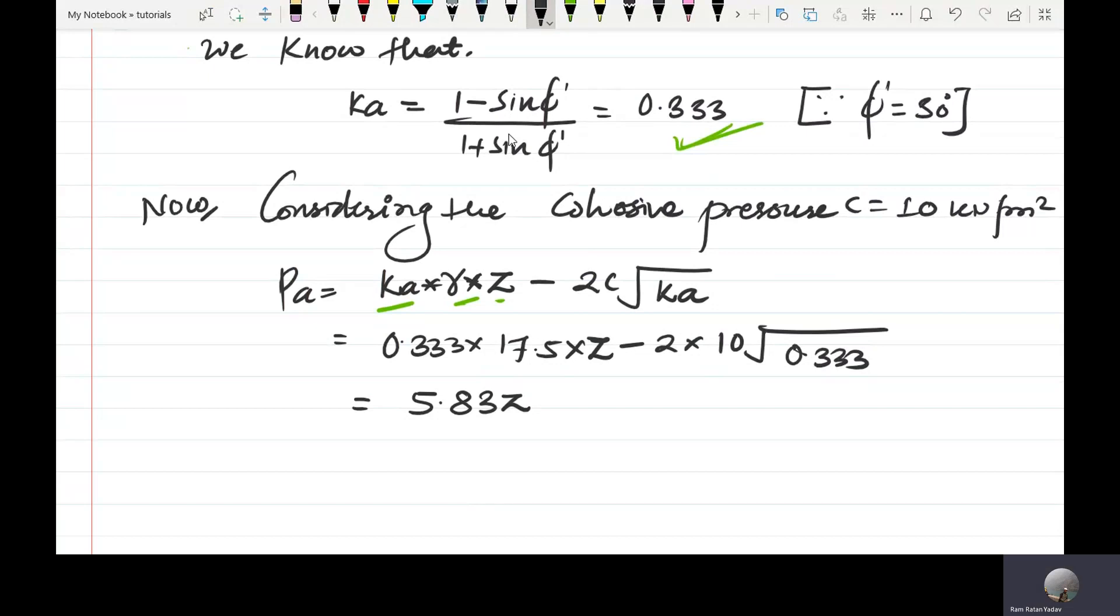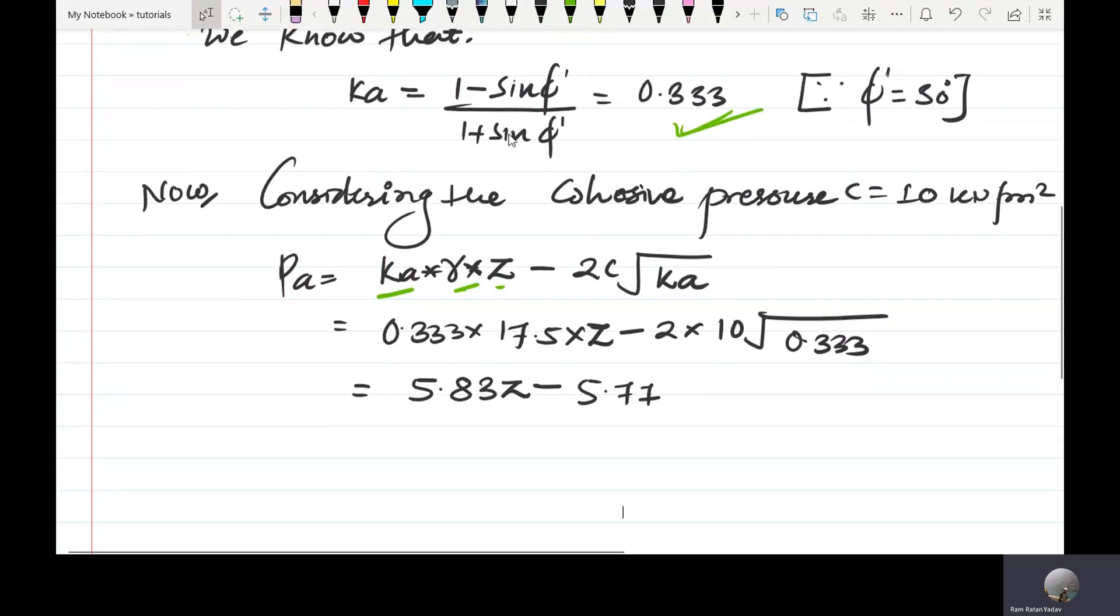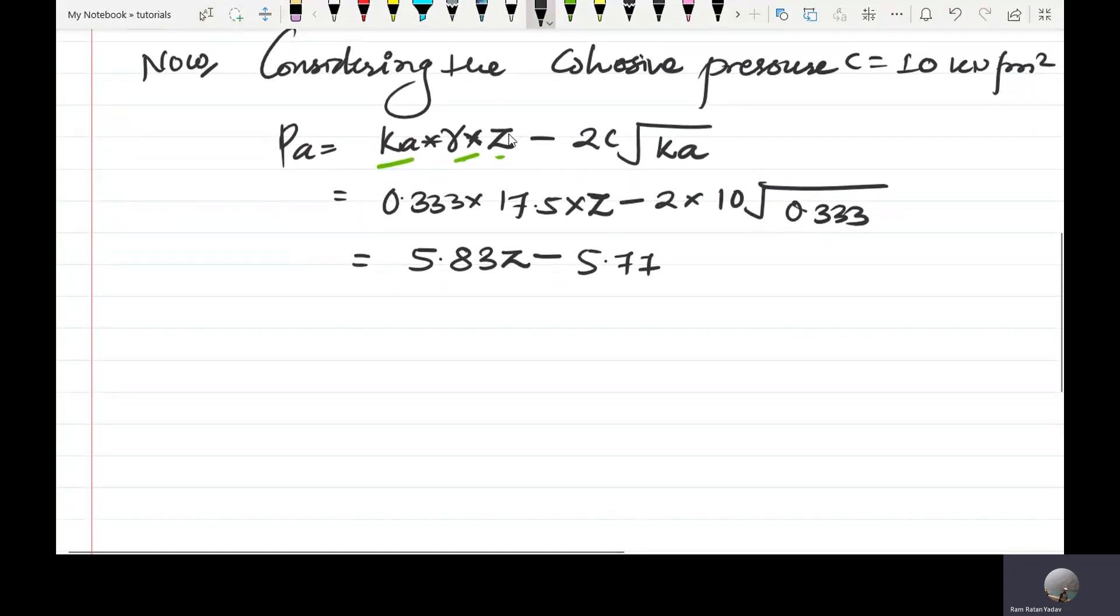The pressure equation is z minus 2c times the square root, which is 5.77. At top, at the top where z equals zero.